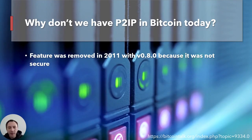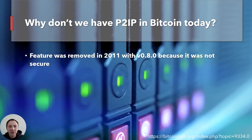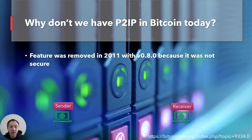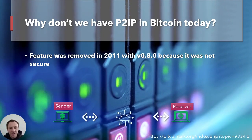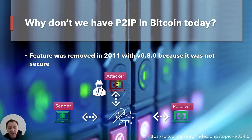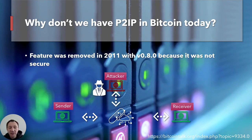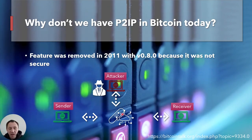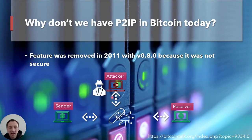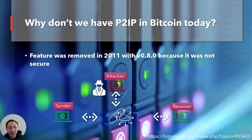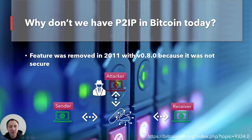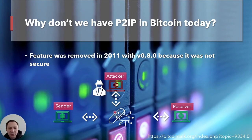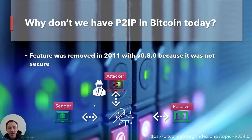So why don't we have Pay2IP today? The feature was removed in 2011 with version 0.8 because it was plainly not secure. It relied on the internet: the sender and receiver communicating over a network. Something that could happen is a man-in-the-middle attack where an attacker intercepts this communication. When the sender is asking for a public key, the attacker — instead of the receiver replying — could provide their own public key. Now that Bitcoin payment goes to the attacker. Because Bitcoin addresses are uniquely generated for each transaction, this could not be tracked, and the attacker walks away with the bitcoins. There was no cryptography on top of this, so it was removed for safety.